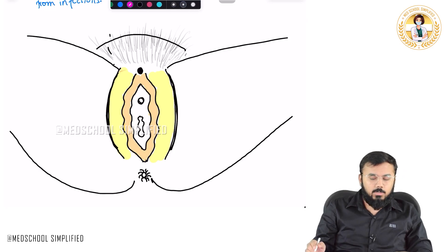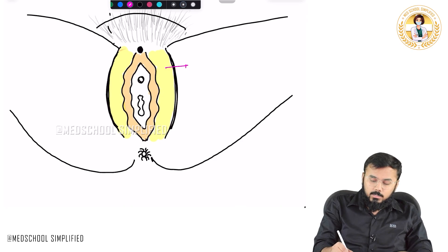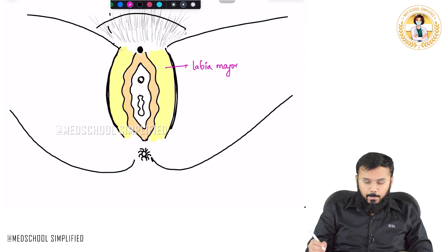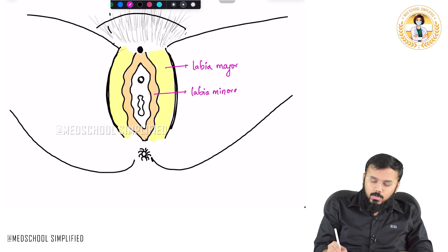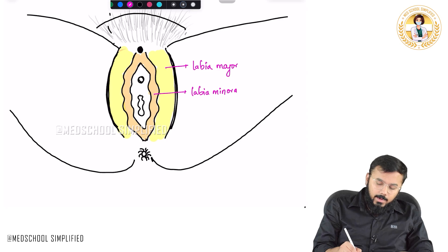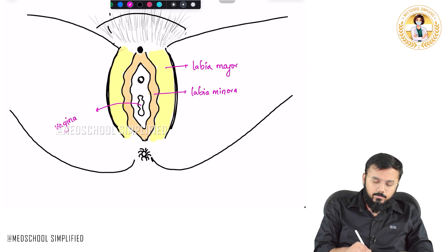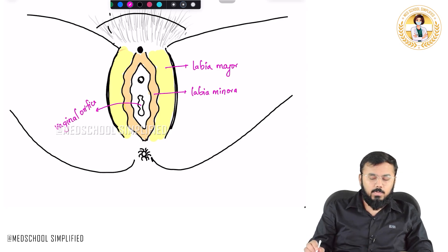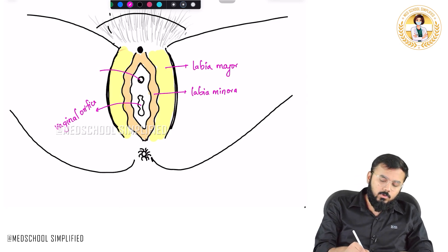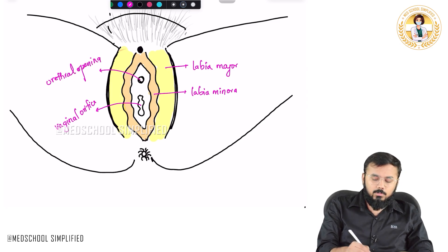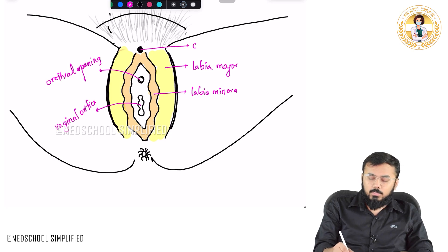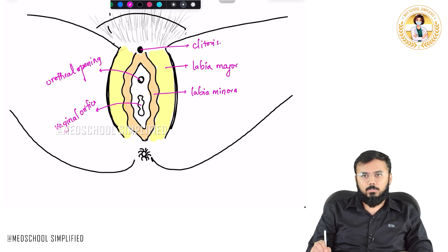So the first important structure is called as your labia majora, or major pudendal lips. The next one is called as your labia minora. The particular opening over here is called as your vaginal orifice or vaginal opening. Next, this one over here is called as your urethral opening. And this is called as your clitoris.